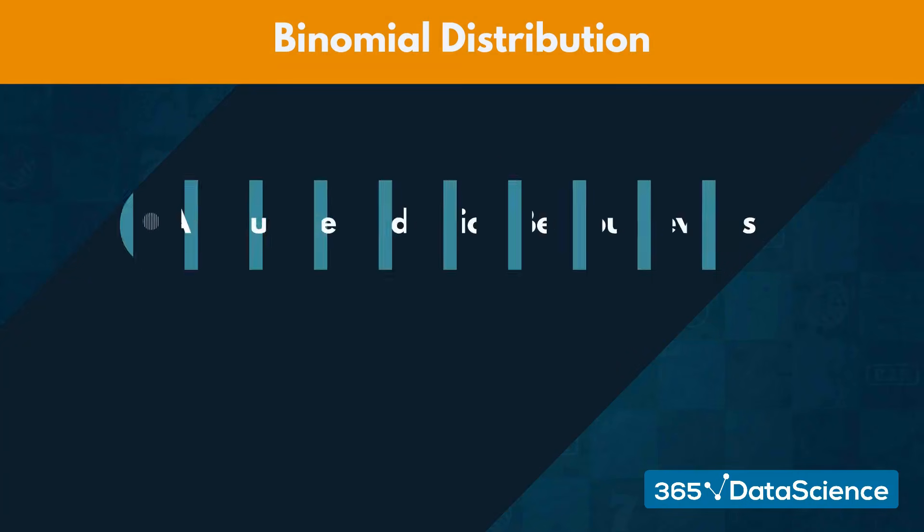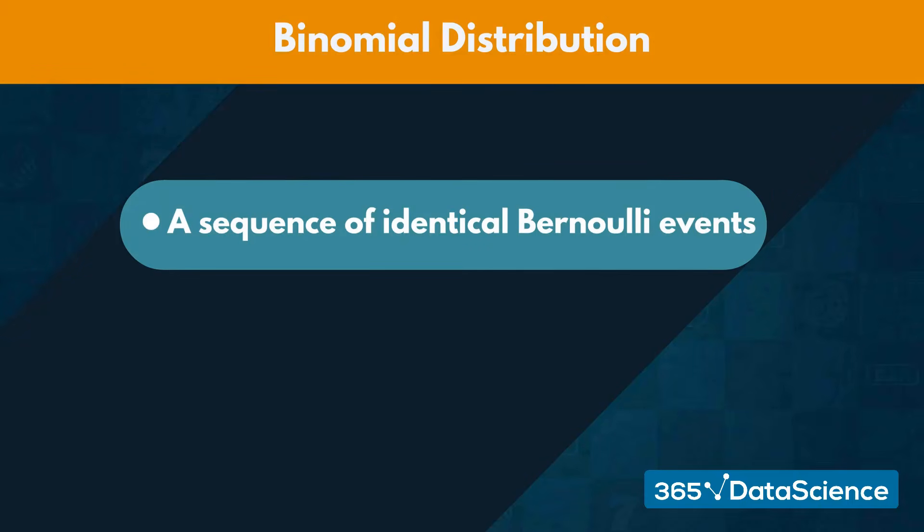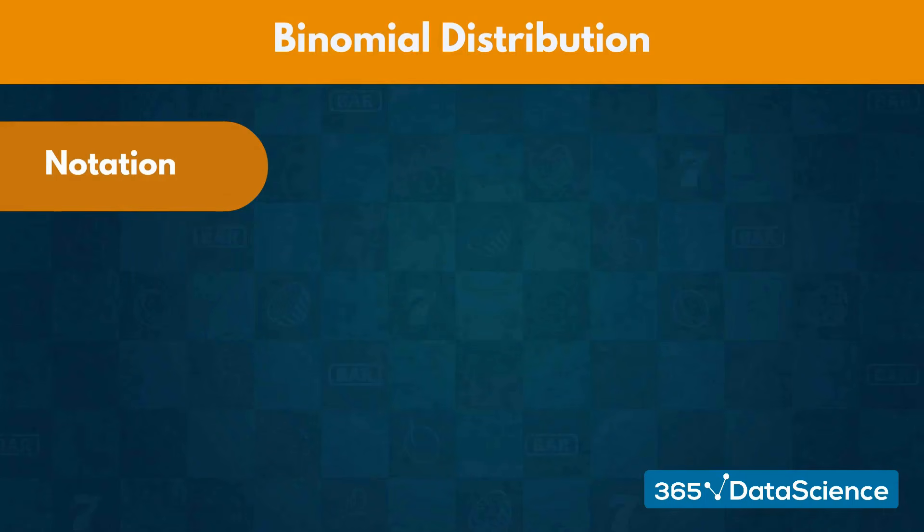In essence, binomial events are a sequence of identical Bernoulli events. Before we get into the differences and similarities between these two distributions, let us examine the proper notation for a binomial distribution.